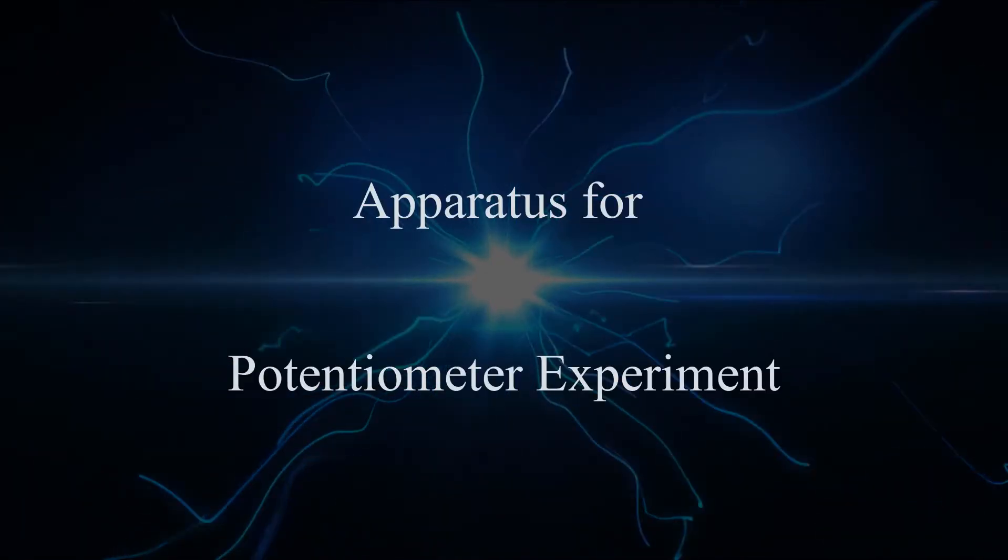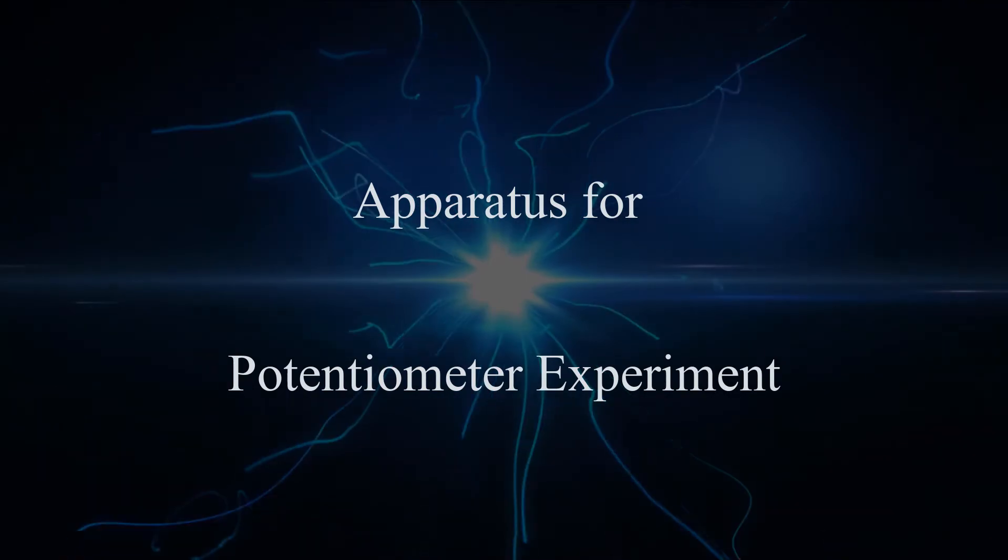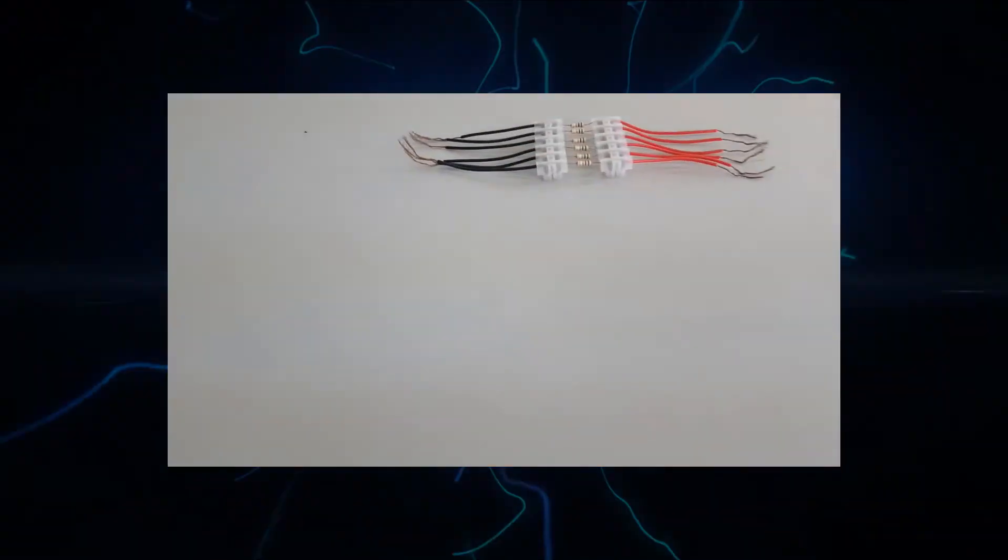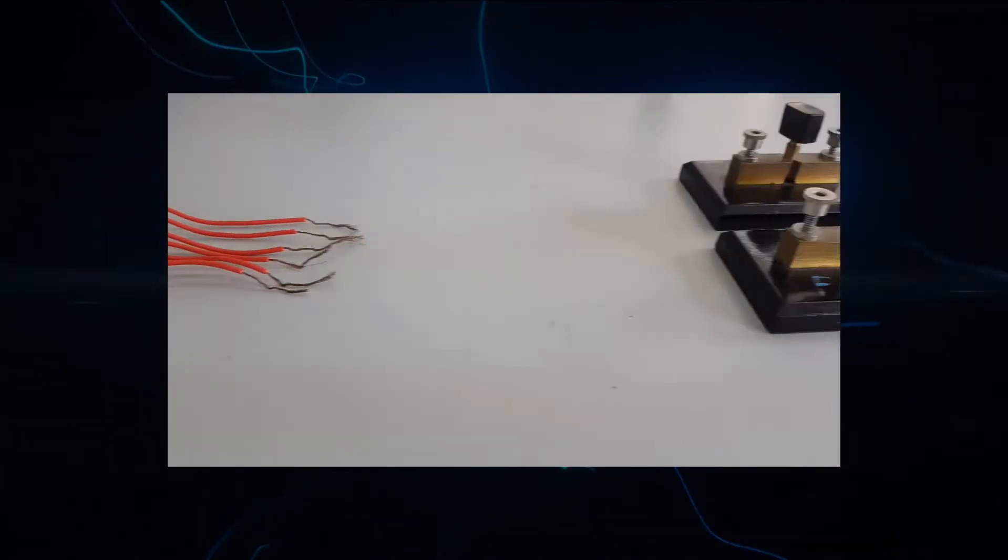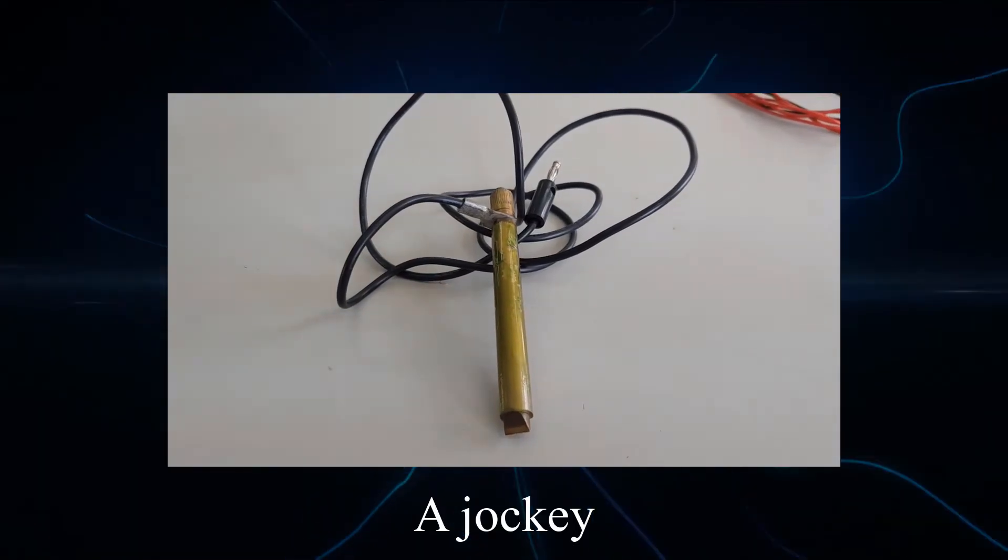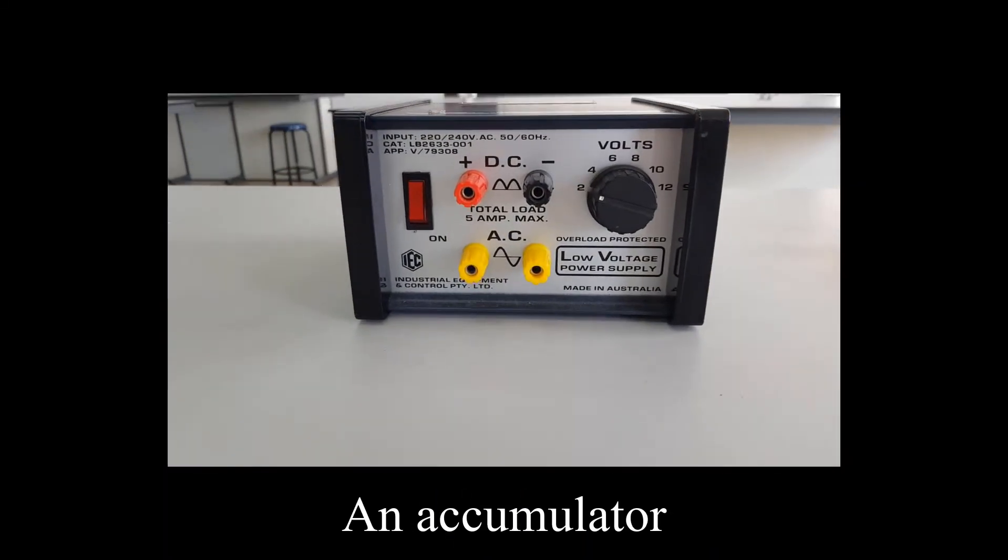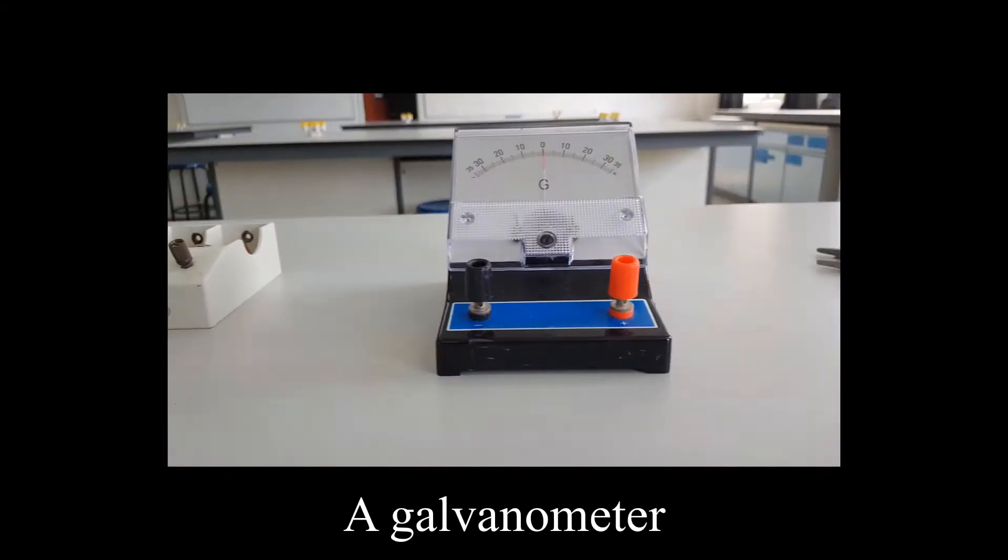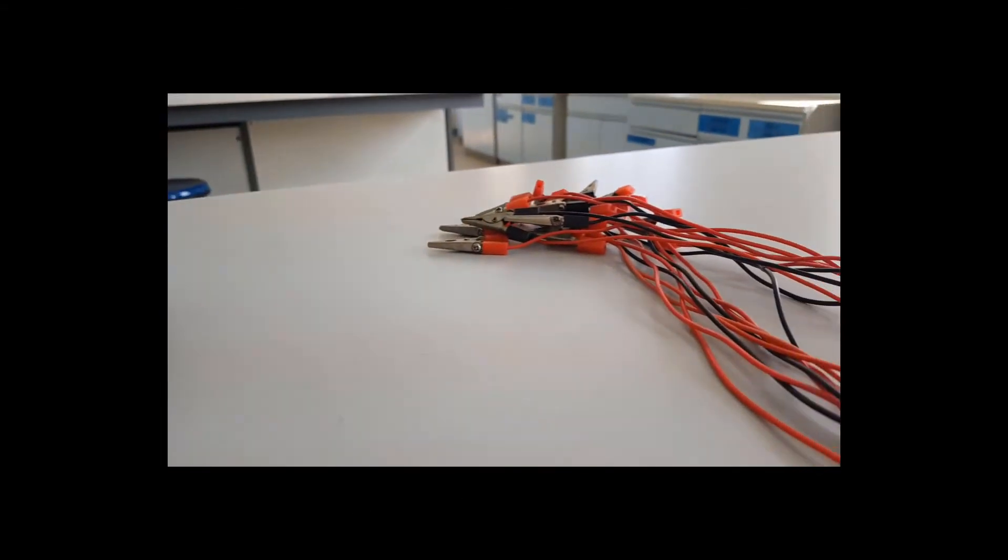Now let's take a look at the apparatus needed for this experiment. A Wheatstone bridge, resistors connected in parallel, switches, a jockey, an accumulator, a dry cell, a galvanometer, and connecting wires.